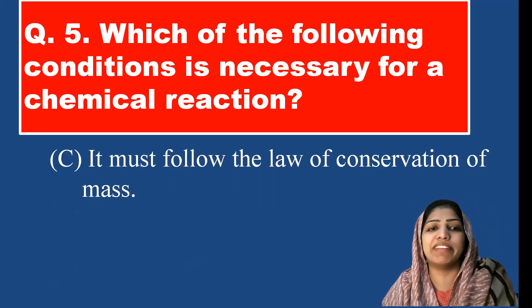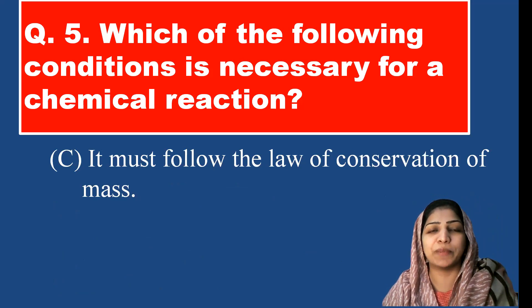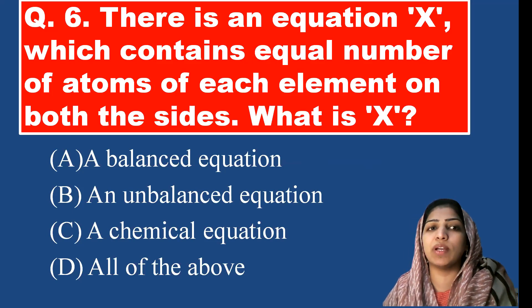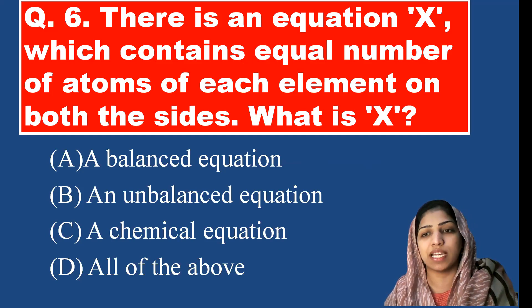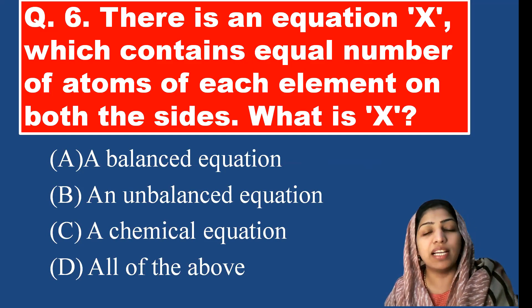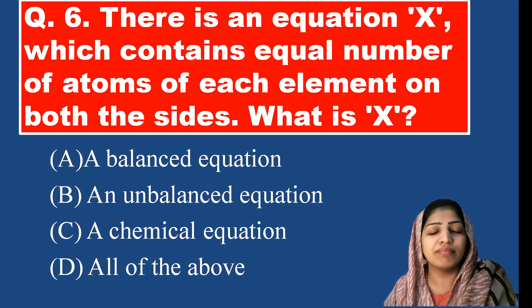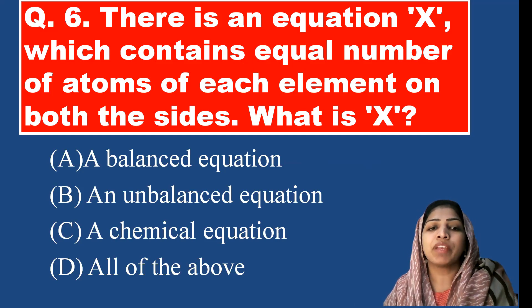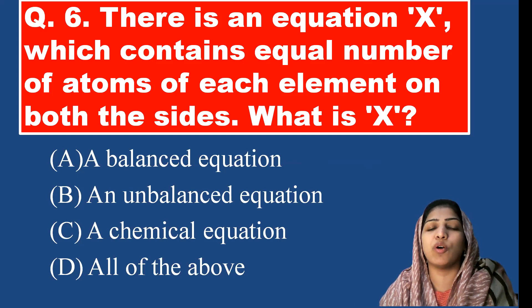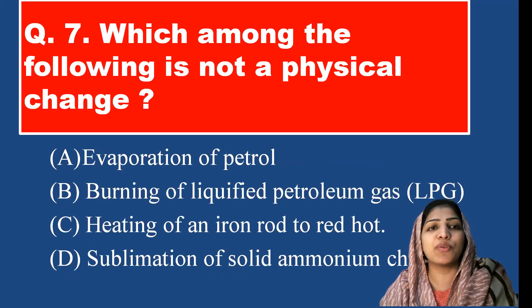There is an equation X which contains an equal number of atoms of each element on both sides — what is X? The reactants and products have an equal number of atoms. This is a balanced chemical equation. An unbalanced equation can only be called a balanced chemical equation once balanced. So option A is the correct answer.